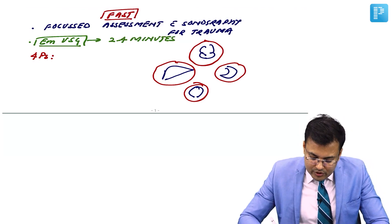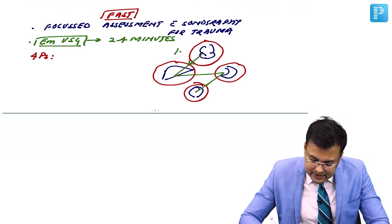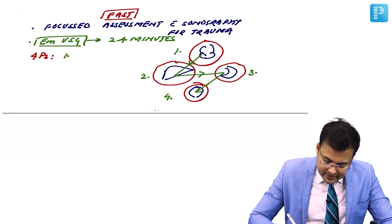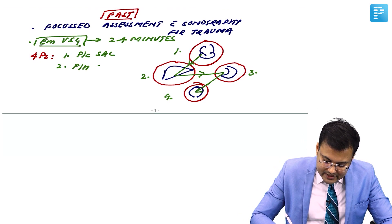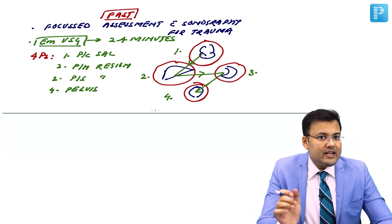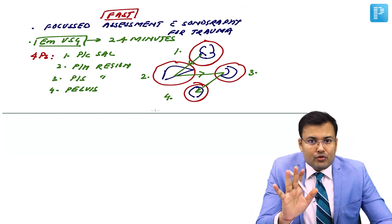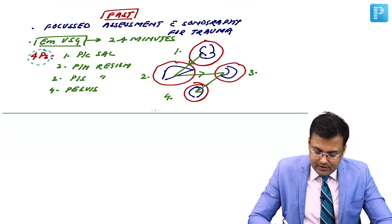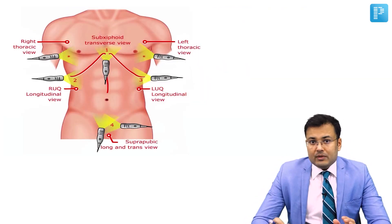FAST assesses four Ps: pericardial sac, perihepatic region, perisplenic region, and pelvis — in that sequence: first, second, third, and fourth. There are four traditional views in FAST, one for each of the four Ps. A useful mnemonic: four Ps assessed in four minutes.